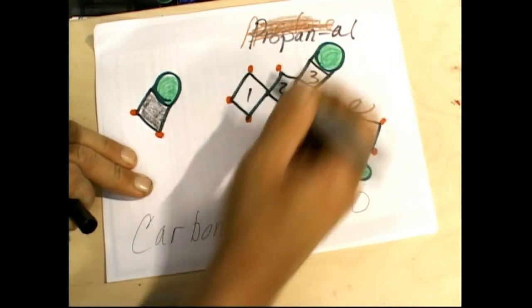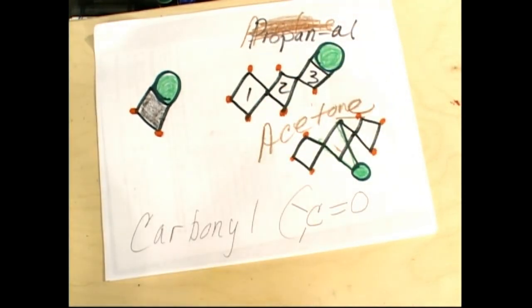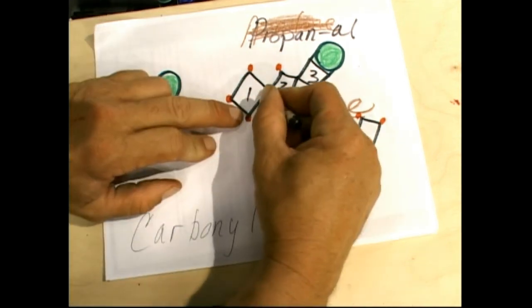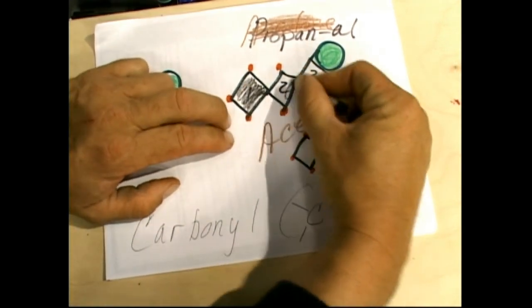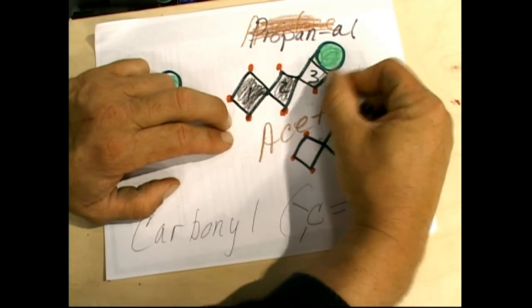AL, because it's on the ender. Propanal. That looks really shoddy, doesn't it? Oh, boy. Anyway. Color them in. One. Two. Three.